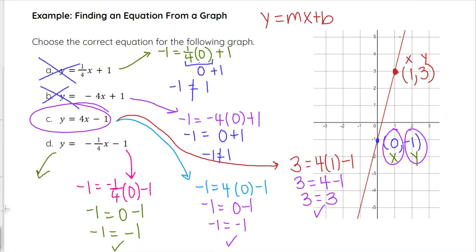And just to show you that, we can go ahead and quickly plug it in. Just to prove that to you, 3 equals negative 1 fourth times 1 minus 1. That gives us 3 equals negative 1 fourth minus 1. Negative 1 fourth minus 1 is going to be negative 5 fourths, and those are not equal, so that would allow us to eliminate choice D. So C is the correct answer.